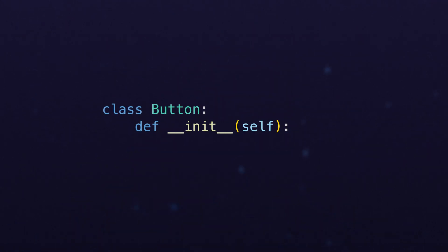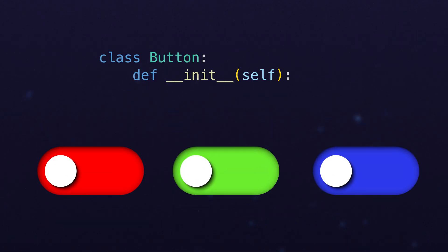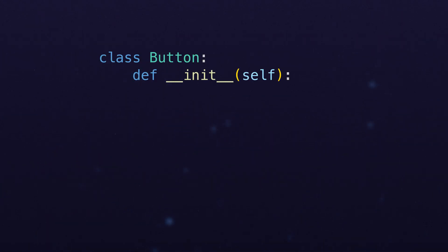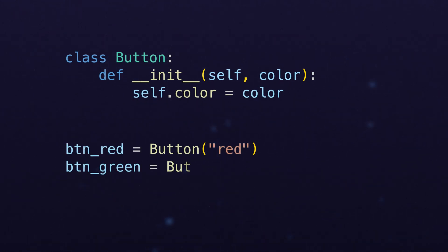So now we can finally talk about enums. Enums are another sum type like a Boolean, and really I like to think about them as kind of extended Booleans. For example, let's say we want to write a button class, and in this button class we want to specify that it can be one of three colors. We could have the button's constructor accept just a string to define which color it's going to be, and we'd accept either the string red, the string green, or the string blue.